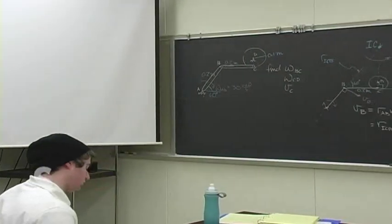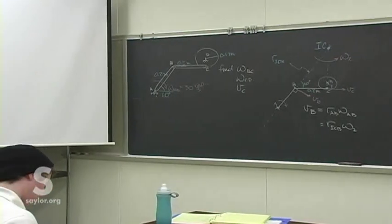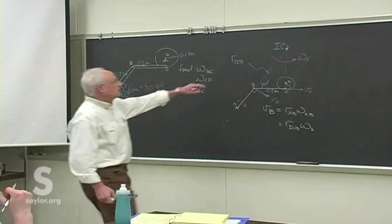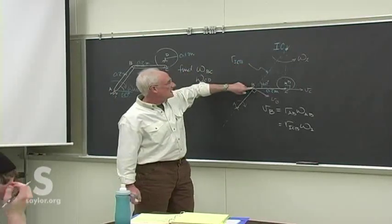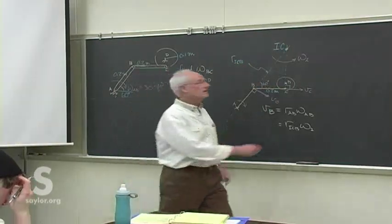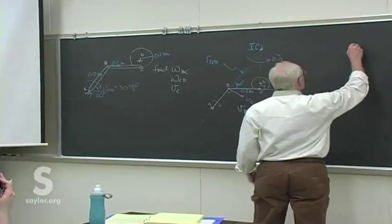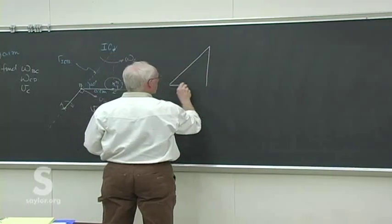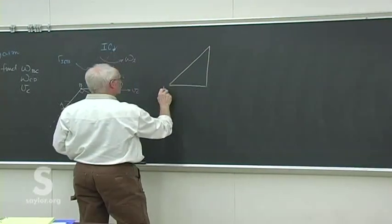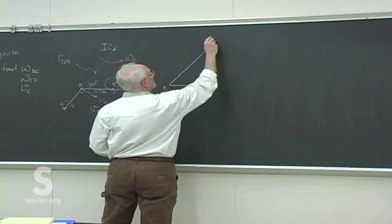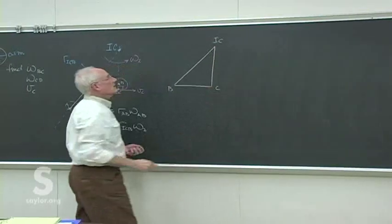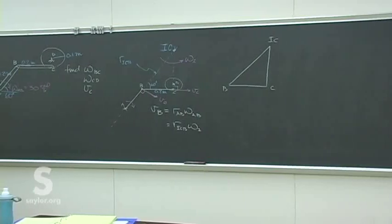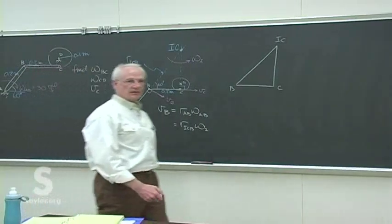A virtual, instantaneous rigid body of the three points IC, B, and C — just for that instant. So you have B, C, and IC as a new virtual rigid body, an instantaneous rigid body. It only lasts for an instant in time — it's ephemeral.